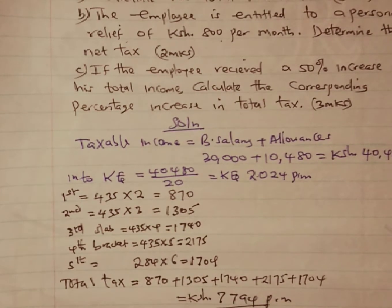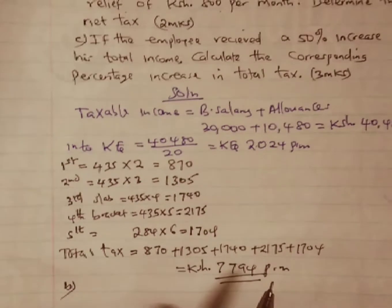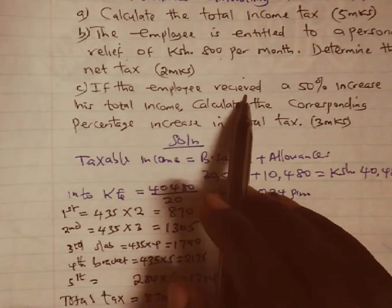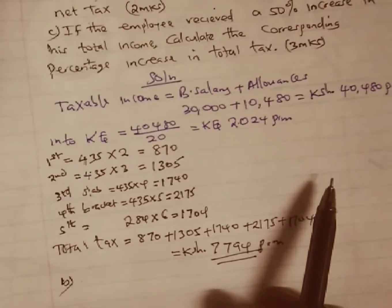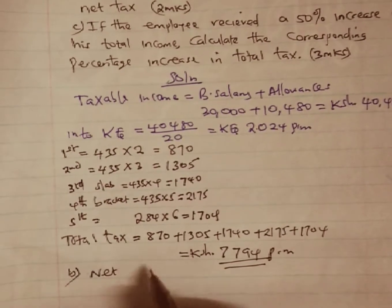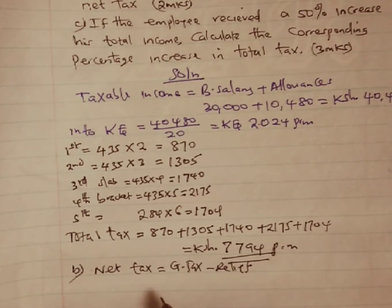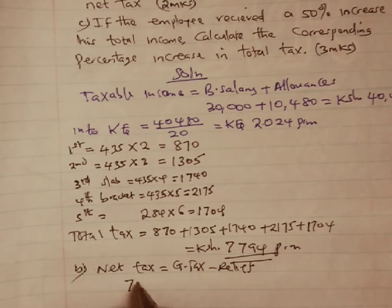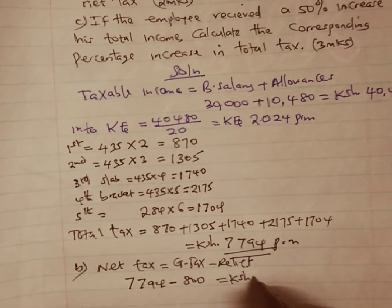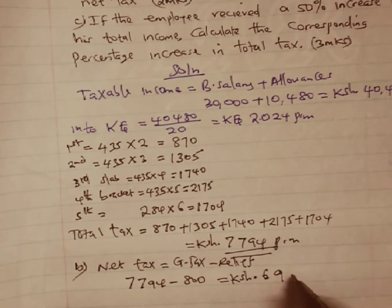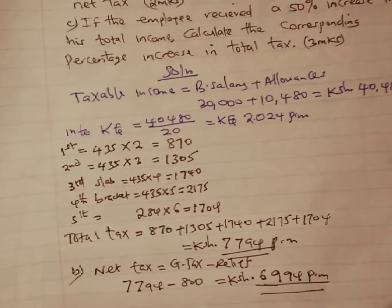Remember to subscribe to the channel and help us share the link. We move to part (b): the employee is entitled to a personal relief of Kenya shillings 800 per month. To find the net tax, we subtract the relief from the gross tax: 7,794 minus 800 equals Kenya shillings 6,994 per month as the net tax — the actual tax paid by this employee.